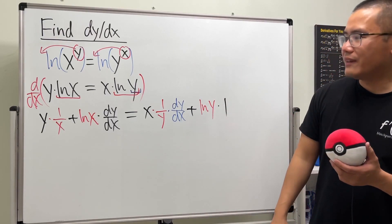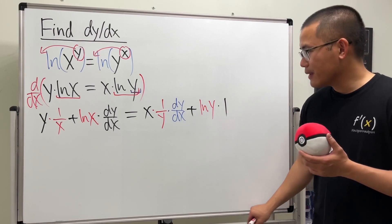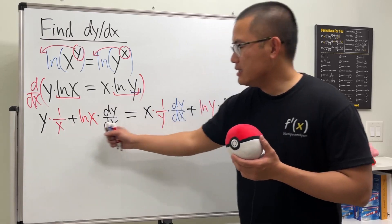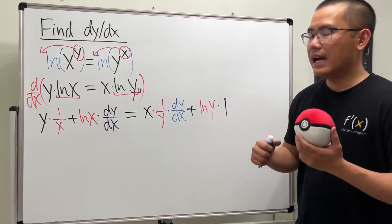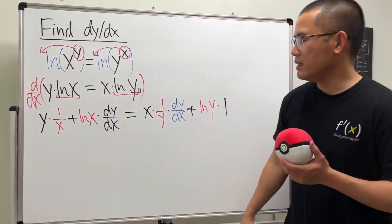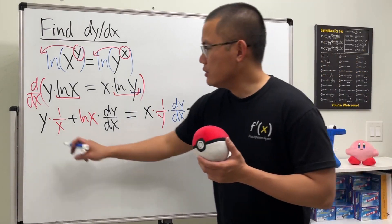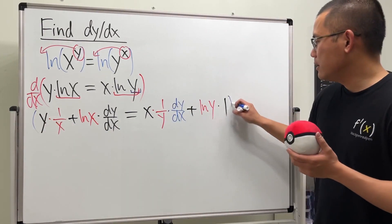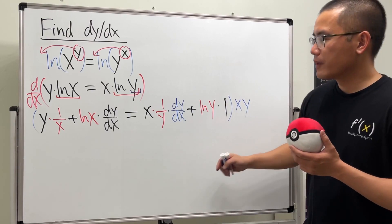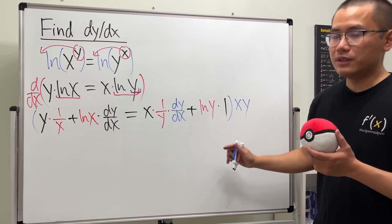Now, this equation has fractions because we have x in one denominator and y in another. So it's a good idea to multiply everyone by the common denominator, which is xy.